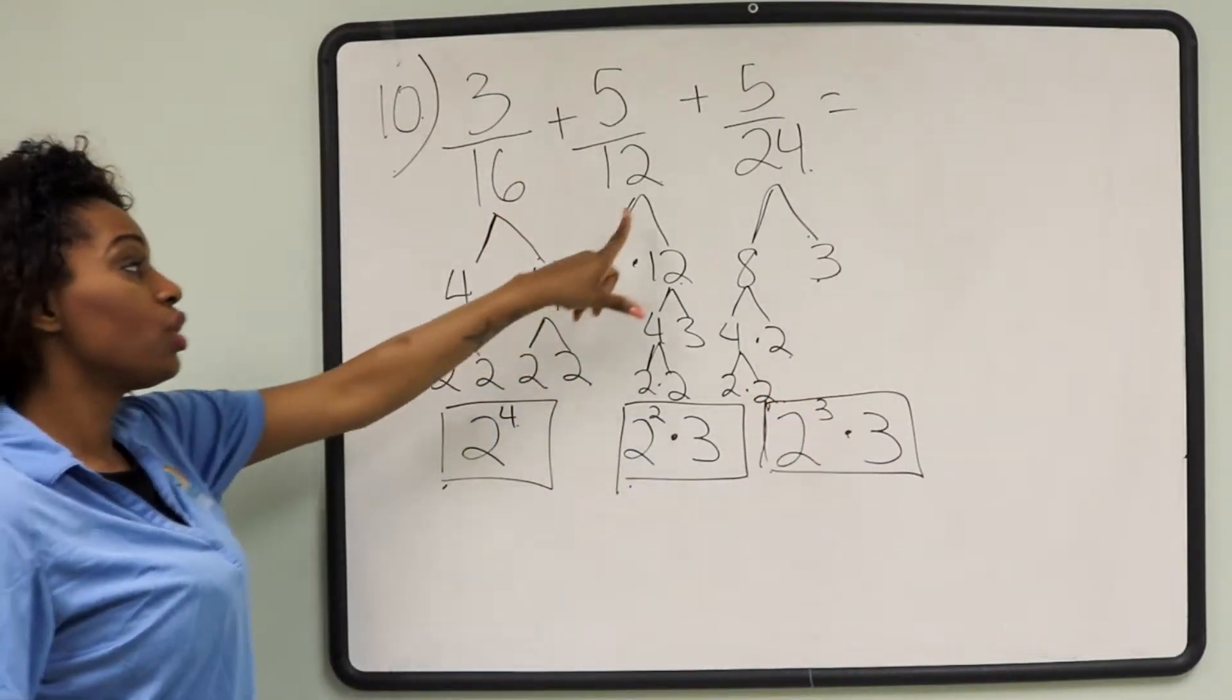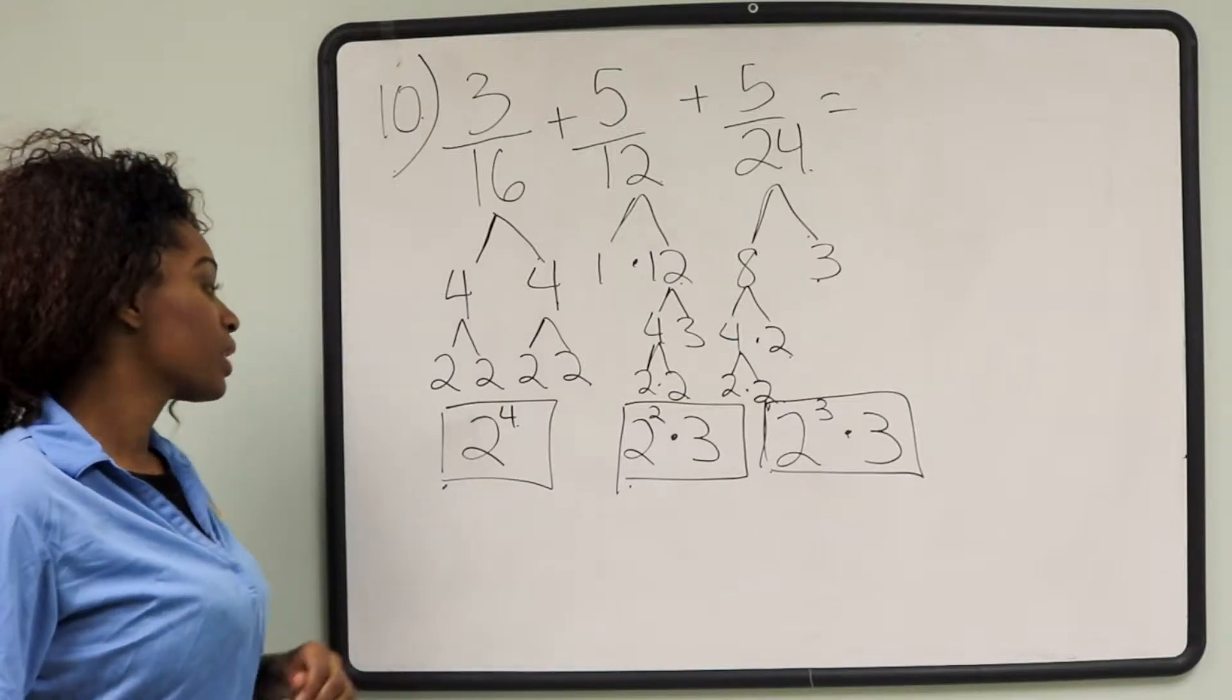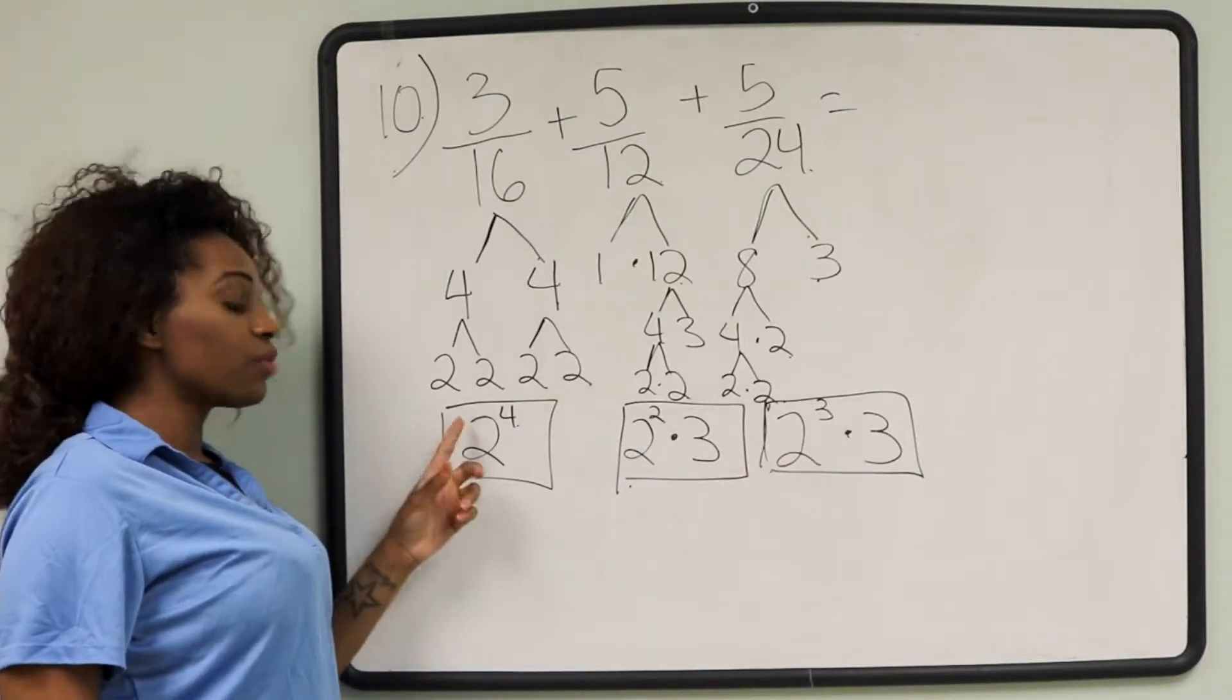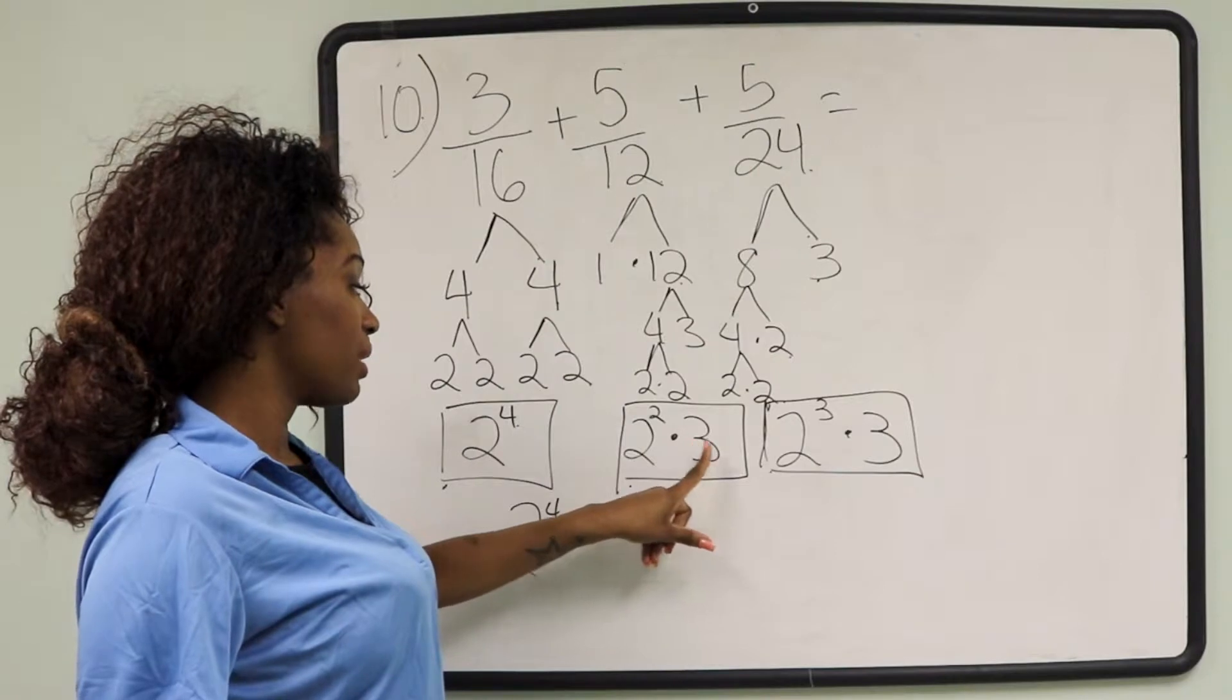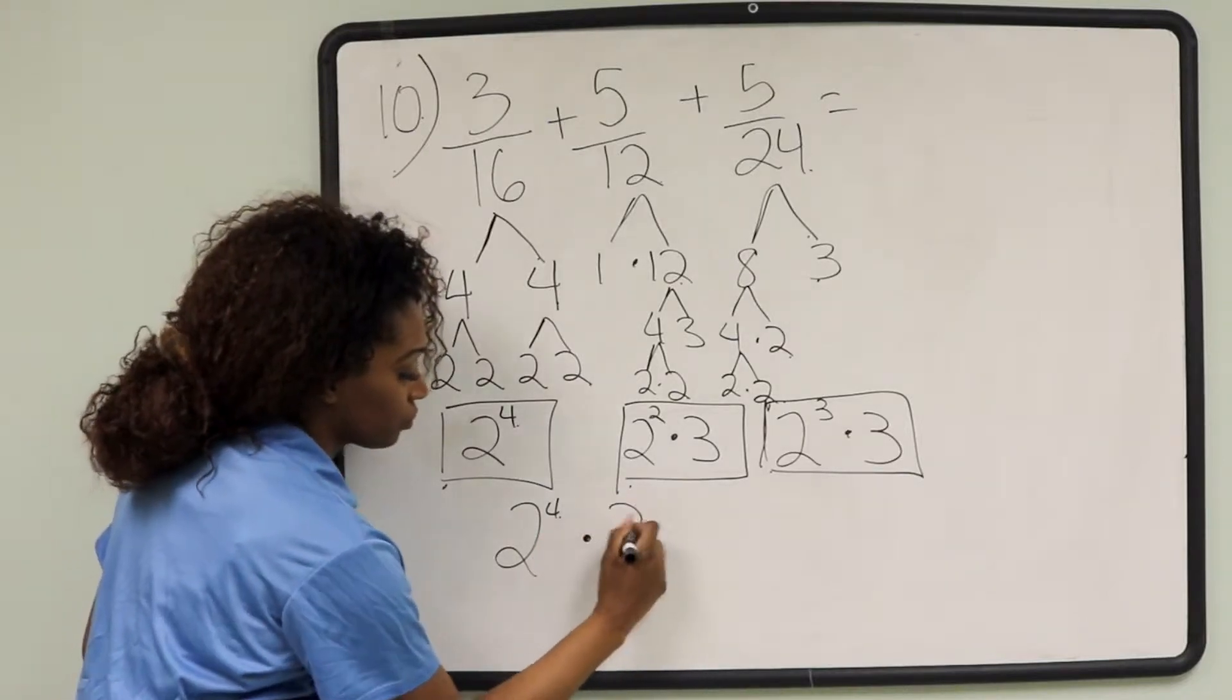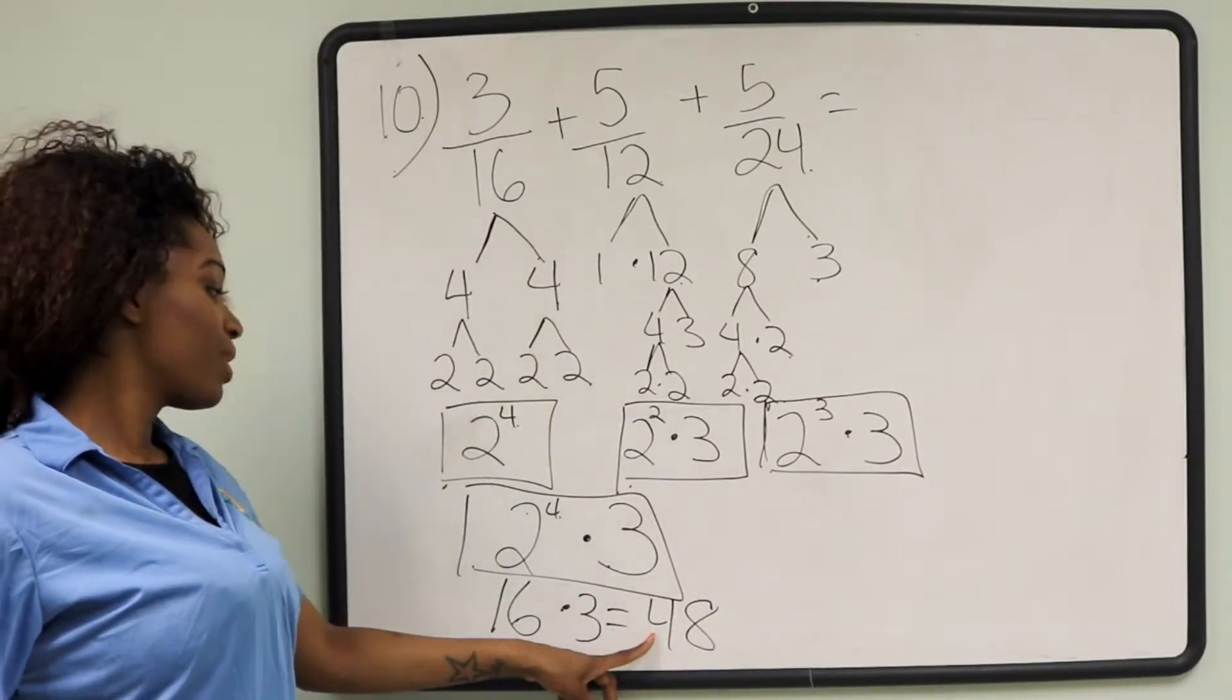Since we've gotten the prime factors for 16, 12, and 24, we can now find the greatest common multiple. We're going to take the greatest prime factors from all three of these problems. What I notice is there's a 2, but the greatest prime factor here is 2 to the 4th power. 2 to the 2nd and 2 to the 3rd we're not going to use because 2 to the 4th is greater. And I see we have 3 in common here and here. We just need to bring down the 3. So 2 to the 4th power is 16, times 3 is 48. Our least common denominator is 48.